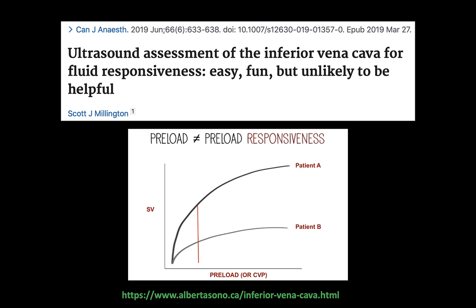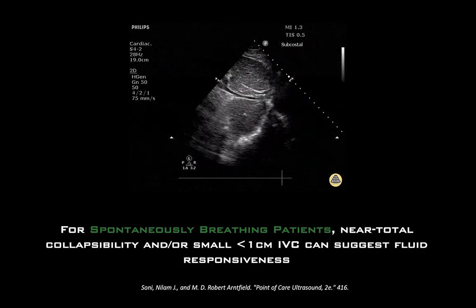An understanding of the physiology will outline why this isn't the case. A one-time estimation of preload or central venous pressure, also known as right atrial pressure, means nothing as we haven't actually challenged a stroke volume curve in a dynamic fashion. We still have not answered the crucial question of where we are on that Frank-Starling curve. The same CVP does not mean the same for patient A, who's on the steep part of the curve, as it does for patient B, who's on the flat part of that curve.